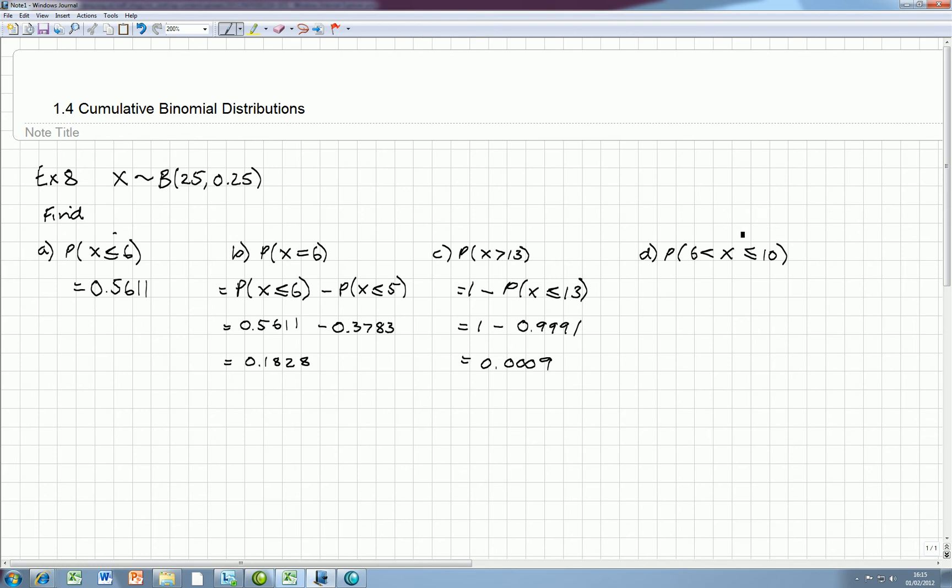So for part D, we're finding the probability that x is greater than 6, but less than or equal to 10. So it might help us to figure out what values that actually represents. And that would be the values x equals 7, 8, 9, and equal to 10. So we can include 10 in that list there.